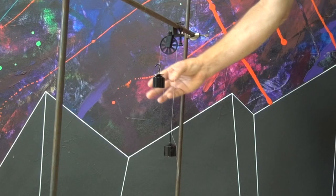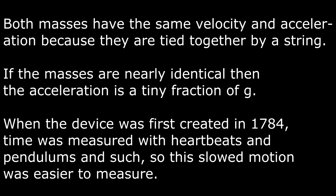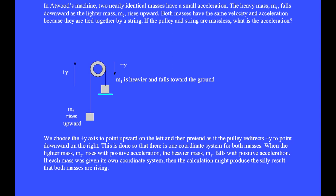In Atwood's machine, two masses are tied together with a string that passes over a pulley. The heavier mass accelerates downward while the lighter mass accelerates upward. Both masses have the same velocity and acceleration because they are tied together by a string. If the masses are nearly identical, the acceleration is a tiny fraction of g. When the device was first created in 1784, time was measured with heartbeats and pendulums, so this slowed motion was easier to measure. The heavy mass m1 falls downward as the lighter mass m2 rises upward.